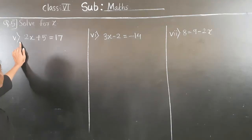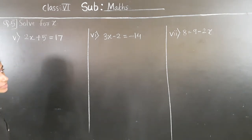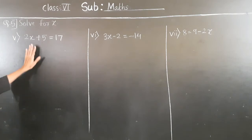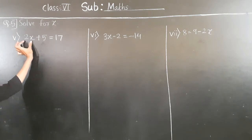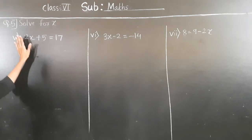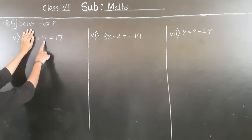Now question number 5: 2x plus 5 is equal to 17. Now see — which number is alone? 5 is alone. This 2 is with the variable, so don't touch 2 first. 5 is alone.